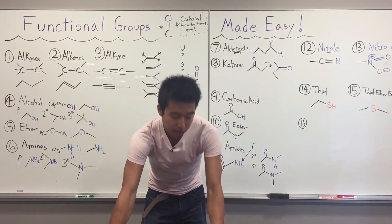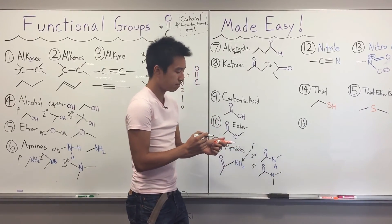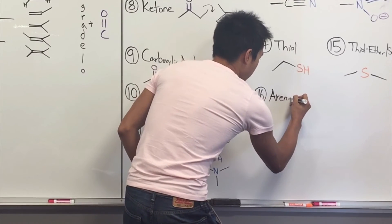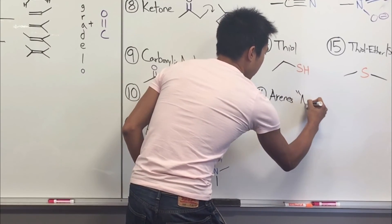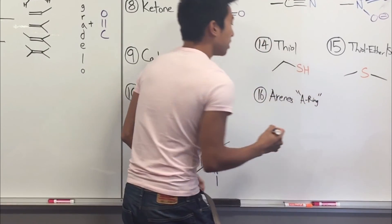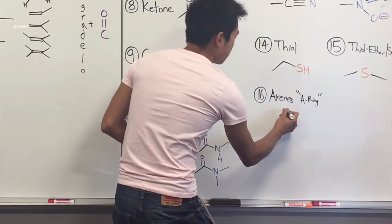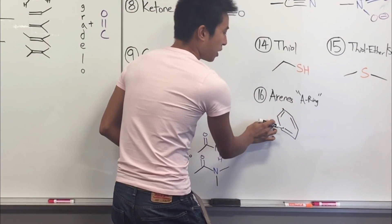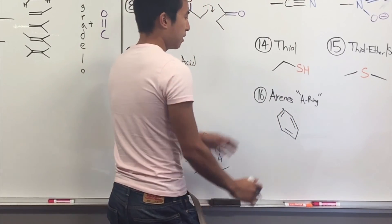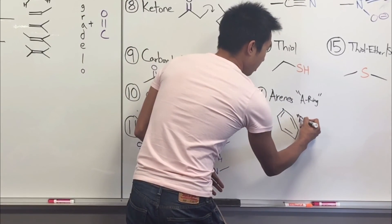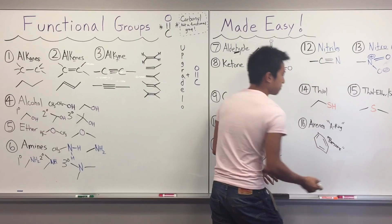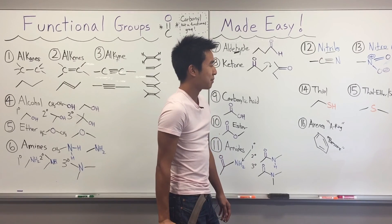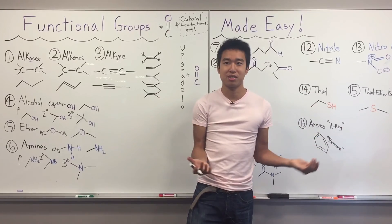The last group is the arene. Arenes are a special type of ring — not just any ring, but one with alternating double bonds, single bonds, double bonds, single bonds, double bonds. This is also known as benzene. You'll see it constantly in Orgo. Those are your 16 functional groups made easy!